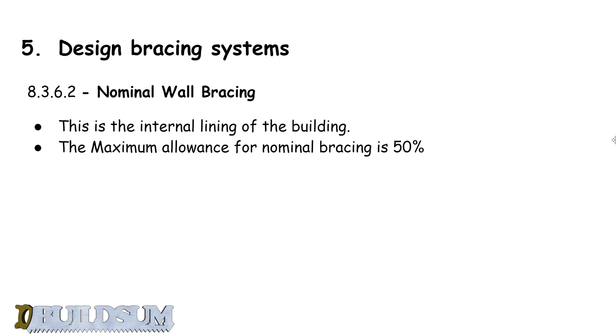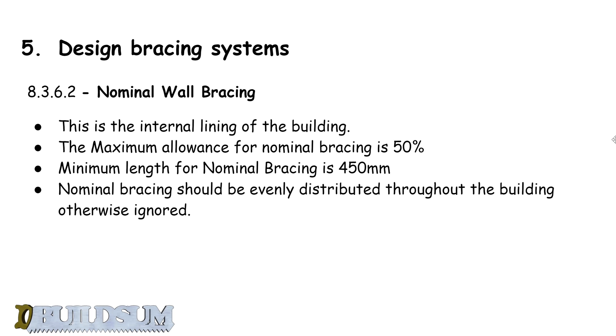A couple of rules around that: we can only use nominal bracing to resist 50% of the total racking force in any direction. If there's a panel size that's less than 450 mil, we can't consider it. So if you've got a section of wall that's less than 450 mil long, you can't include that in your calculations. And it should be evenly distributed throughout the building.